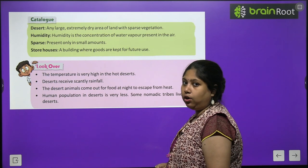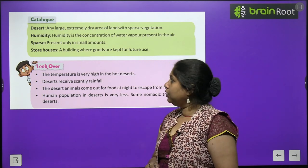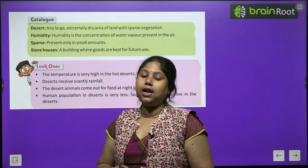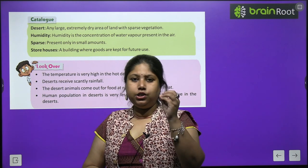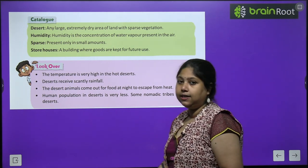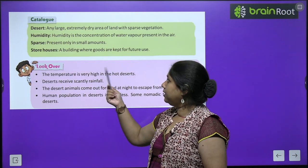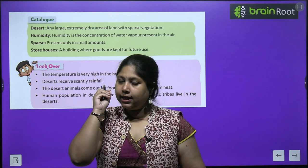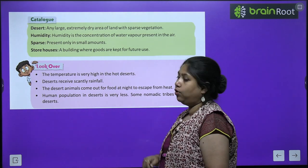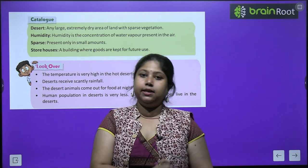With this we come to the end of the chapter. Let's study the important terms: Desert — a large, extremely dry area of land with sparse vegetation. Humidity — the concentration of water vapor present in the air — hawa mein kitna bhaap hai use hum humidity bolte hain. Sparse — present in small amount. Storehouses — a building or place where goods are kept for future use.